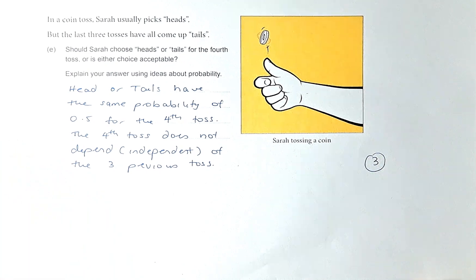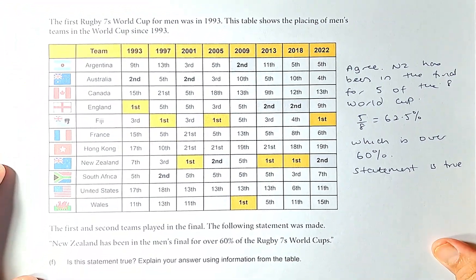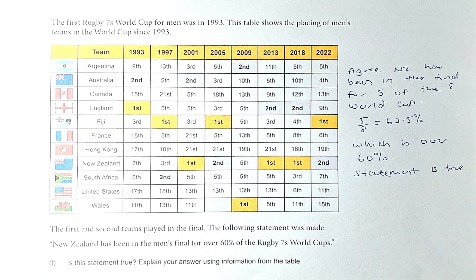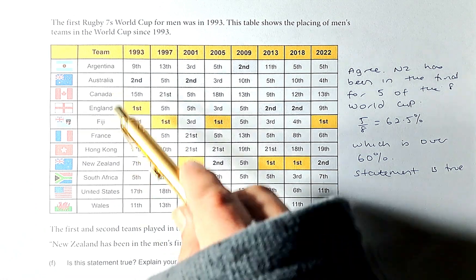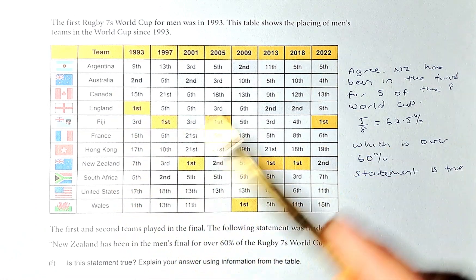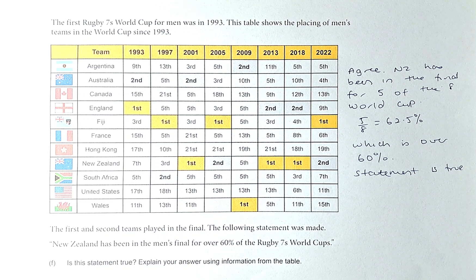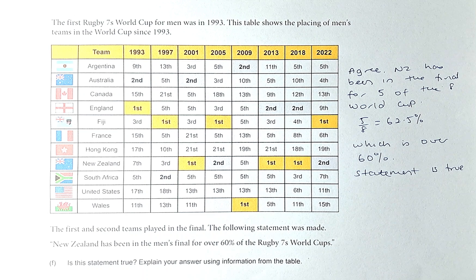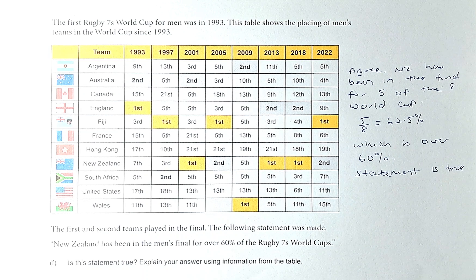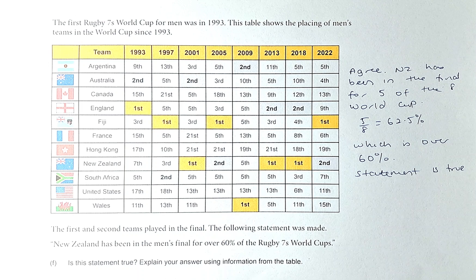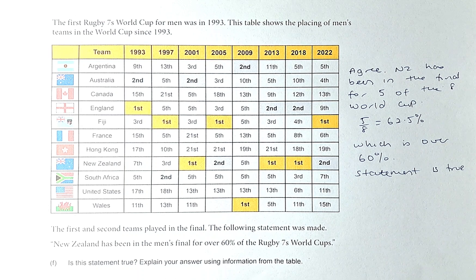Now let's do the last question on this paper. The first Rugby 7 World Cup for men was held in 1993, then every 4 years until 2022. The table shows the placing of men's teams in the World Cup since 1993. The question is: the first and second place teams played in a final. The following statement was made — New Zealand has been in a final for over 60% of the Rugby 7 World Cups. Is this statement true or false? Explain your answer using information from the table.